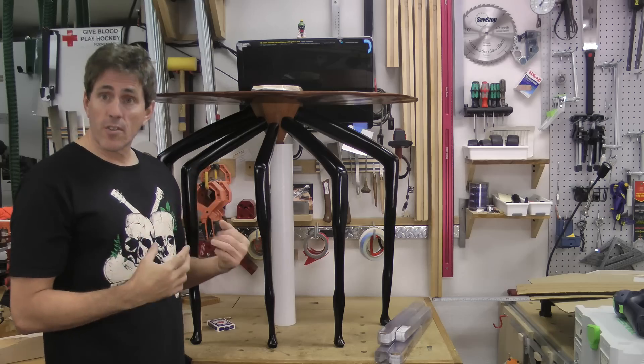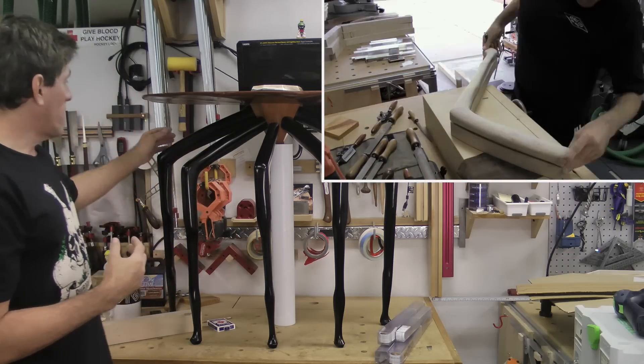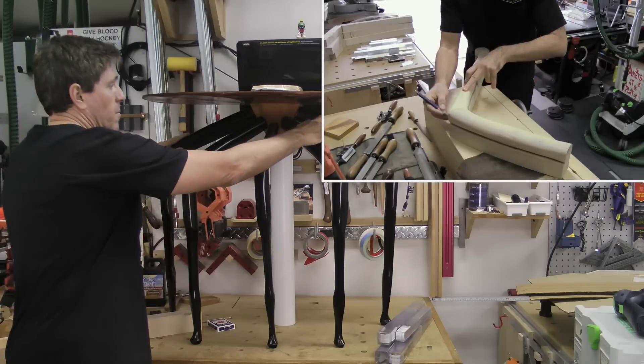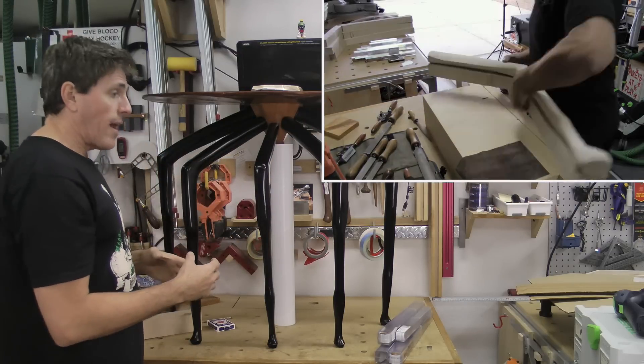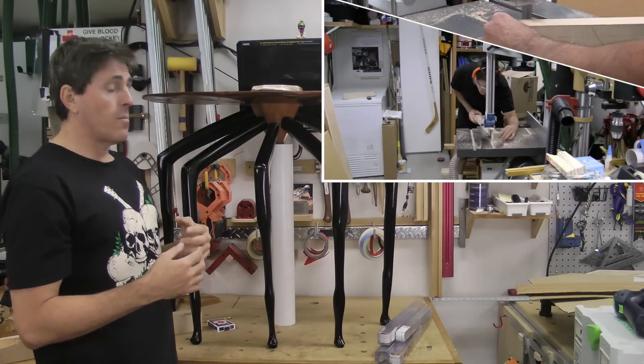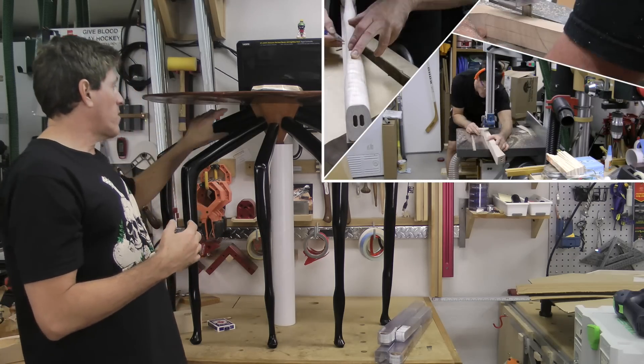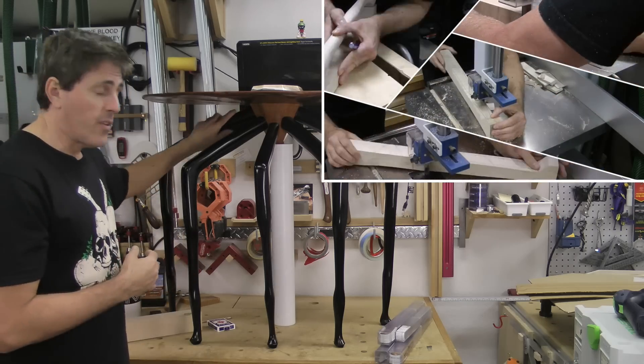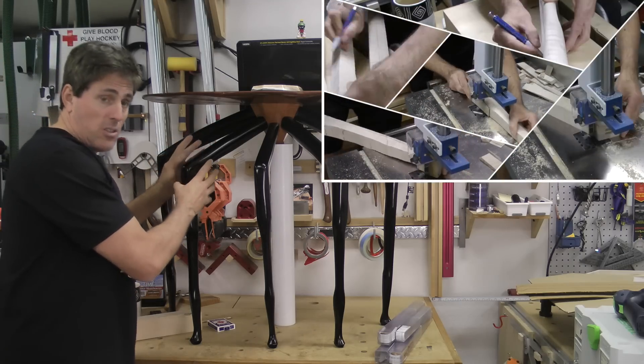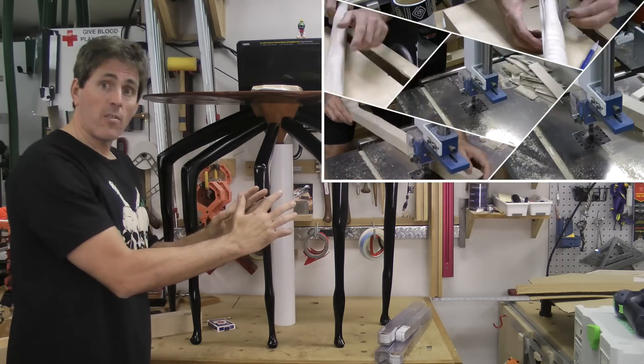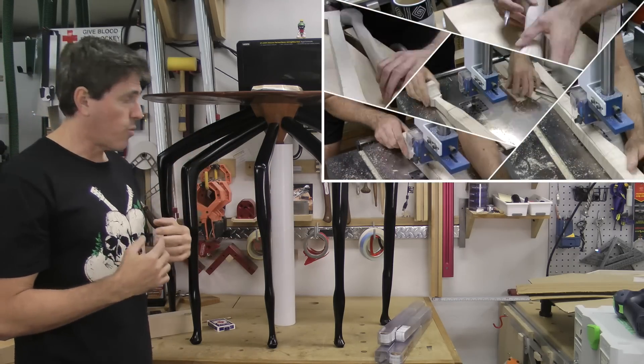So what I did is I took that first leg. I mirrored it to create this leg here because I had initially made this outside leg here. And then by just drawing it onto the blank, then I was able to take advantage of using the bandsaw. So I used the bandsaw to cut this one here. So once I had this one cut out on the bandsaw, then I was able to kind of move it and scale it to the stock for the other legs. And then I bandsawed those as well.